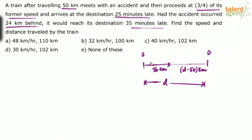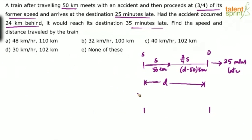For the first 50 kilometers, the train runs at regular speed S. After the accident, the speed reduces to three-fourth of S, and the train arrives 25 minutes late. There is another situation with the same starting point and destination, total distance D, but the accident takes place 24 kilometers behind.